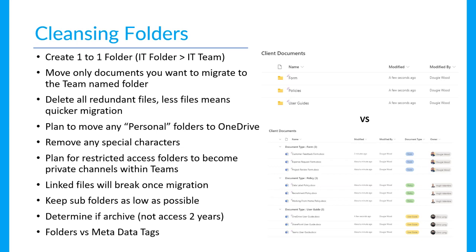In the cleansing folder stage, we're tidying up the documents, files, and folders so they're ready to migrate without issues. There are some thresholds to be aware of and things to address first to avoid problems. Before migration, create a one-to-one folder mapping — if you're moving from a file server, have folders on the file server named exactly after the teams they'll migrate to: IT team, finance team, HR team. This one-to-one mapping makes it simple; having many different mappings for one team gets very complicated and increases migration risk.